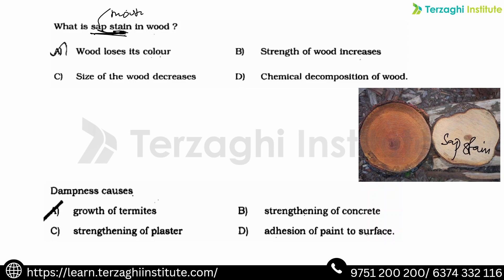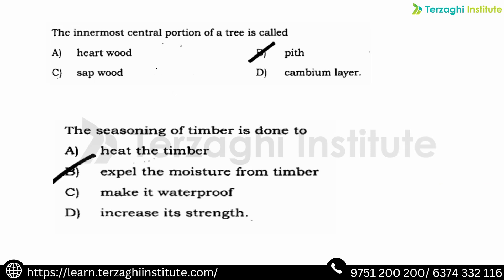Sap stain refers to color change due to moisture content in the sap. Dampness is another associated issue. The most central portion of the tree is the pith, as we saw in the diagram — the dark shaded portion is the pith and cambium layer. Seasoning is done to expel moisture from timber.